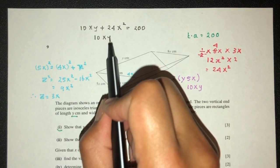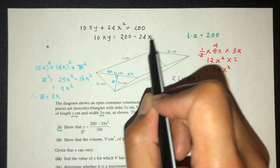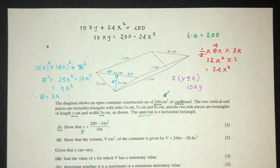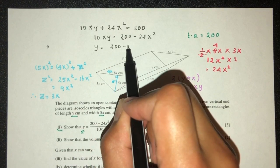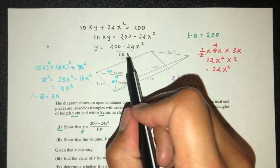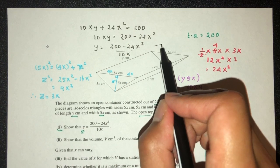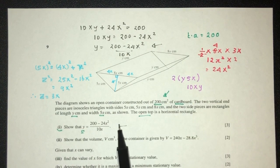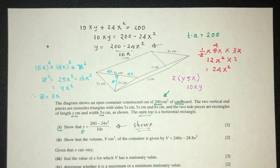We have 10xy plus 24x square is equal to 200. Now we have 10xy equals 200 minus 24x square. Now we can simplify. y should be 200 minus 24x square divided by 10x. So again, as you can see, this is exactly shown as required right here. Shown as required. Now this is part one of the question.